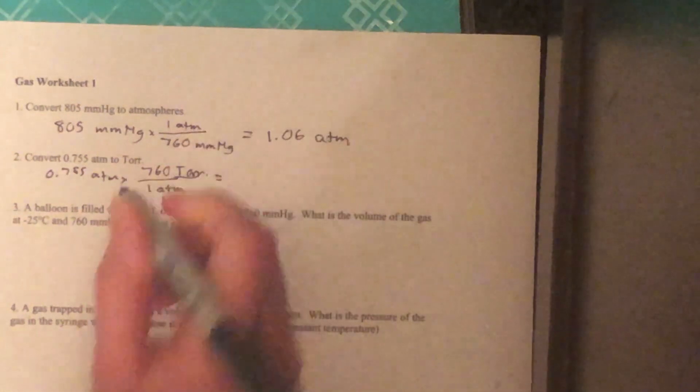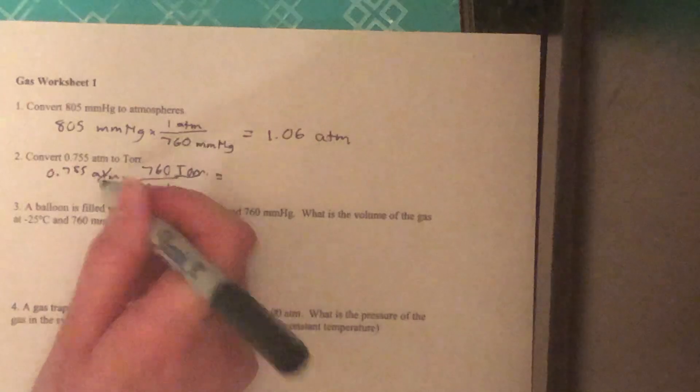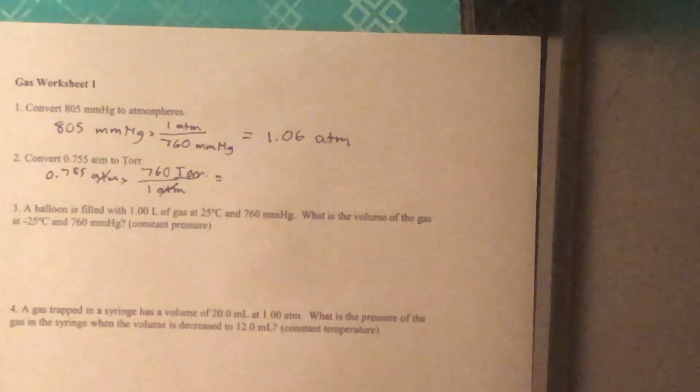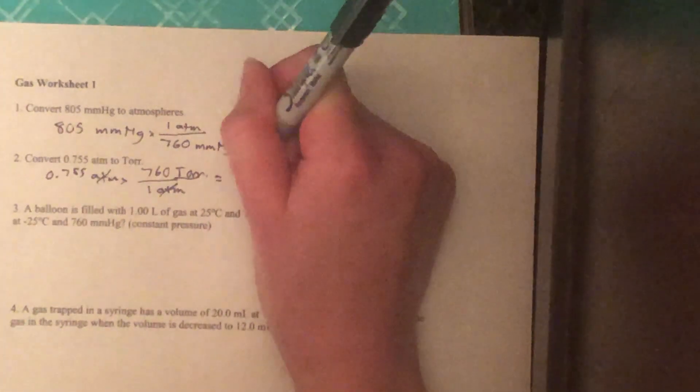We'll have our torr on the top. So when we multiply everything on the top and divide everything on the bottom, we get 574 torr.